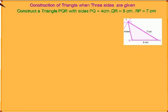Draw a rough sketch of the triangle and label it with the given measurements. To draw a triangle with the actual measurements, draw a line segment QR of length 5 cm as a base.